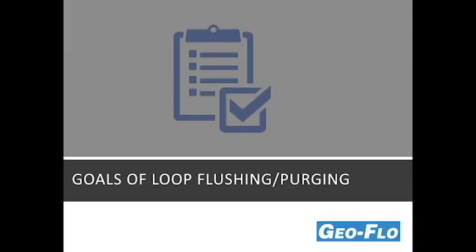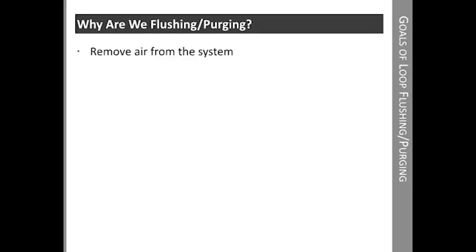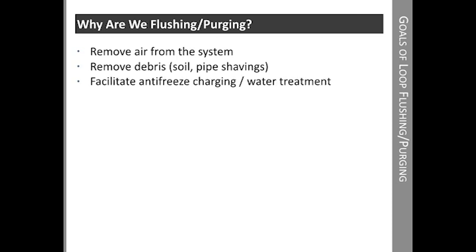Let's talk about the goals of flushing a ground loop first. Many of us in the industry just take it for granted that the loop must be flushed. However, we should consider the reasons and discuss the potential issues with a ground loop that has not been properly purged of air and flushed of debris. The first goal is removal of air from the system. We also need to remove any debris that may have been introduced during installation, such as soil or pipe shavings. Then the flush cart can assist in adding antifreeze to the system and/or water treatment chemicals.